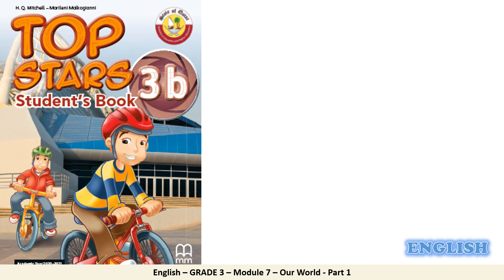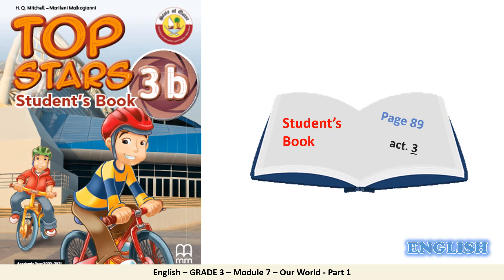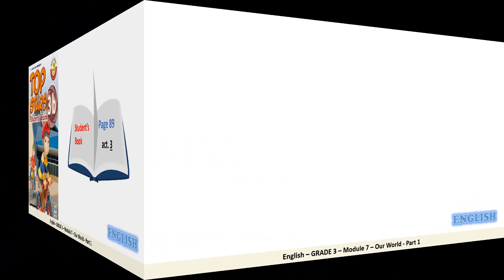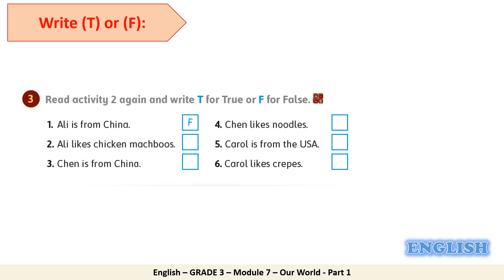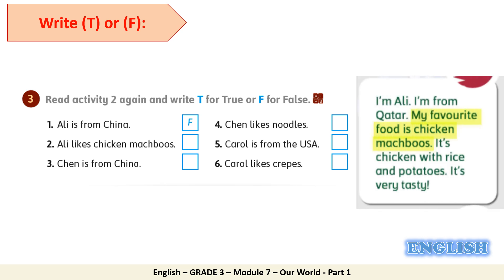Now let's check our understanding of the text. To do so, we will open our student book, page number 89, to complete activity number 3. In this activity, we have to read the text again, then read the sentences and write T if the sentence is true or F if the sentence is false. The first one is solved for you — 'Ali is from China' is false. Number two — 'Ali likes chicken machbous.' Let's check the text. It says 'my favourite food is chicken machbous.' Excellent — the sentence is true.